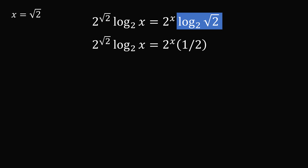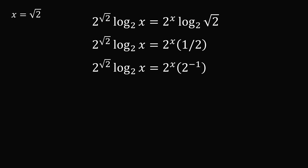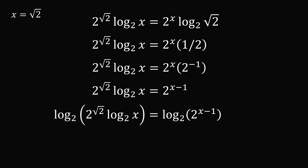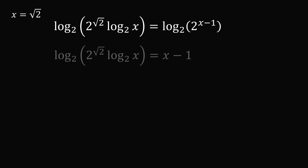Now, one half can be rewritten as 2 to the power of negative 1. And then we have 2 to the power of x multiplied by 2 to the power of negative 1, which equals 2 to the power of x minus 1. We can now simplify this by taking the log base 2 of both sides of the equation. We can bring down the exponent x minus 1, which will cancel out, so the right-hand side equals x minus 1. On the left-hand side, we have log base 2 of a product — one term is 2 to the power of square root of 2, and the other term is log base 2 of x.